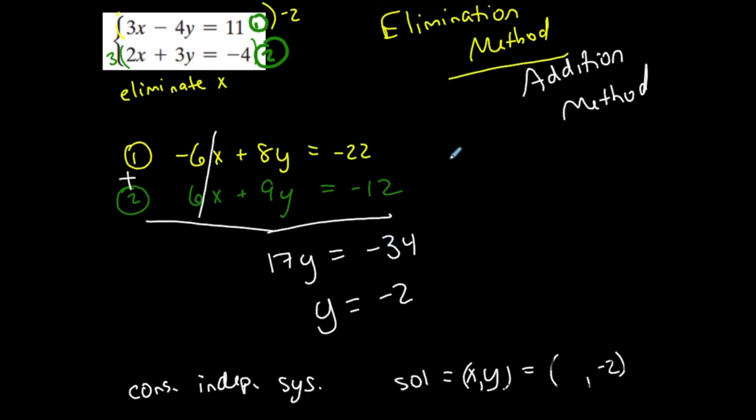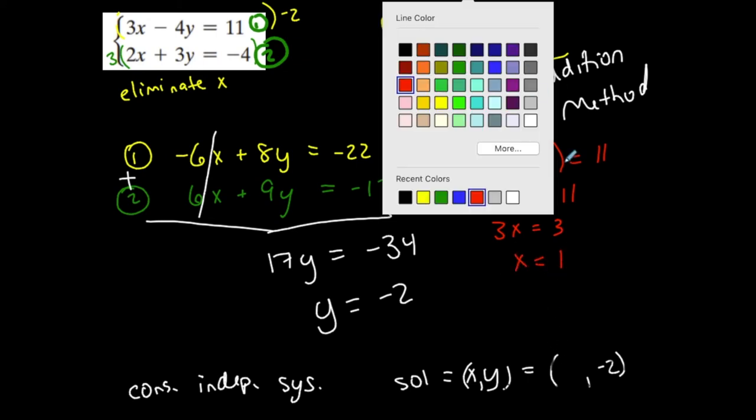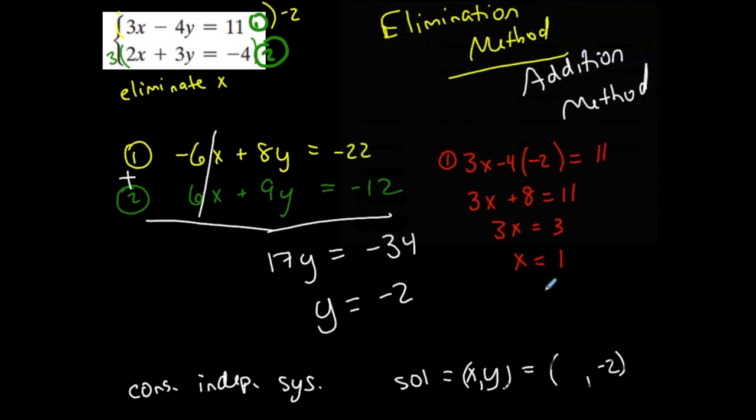Now I can use either equation to find x. Let's just use equation 1. 3x minus 4 times y, which is negative 2, is equal to 11. And now I can solve for x. Subtract 8 from both sides. 3x is equal to 3. So x is equal to 1. So now I have my solution, which is the ordered pair 1, negative 2.